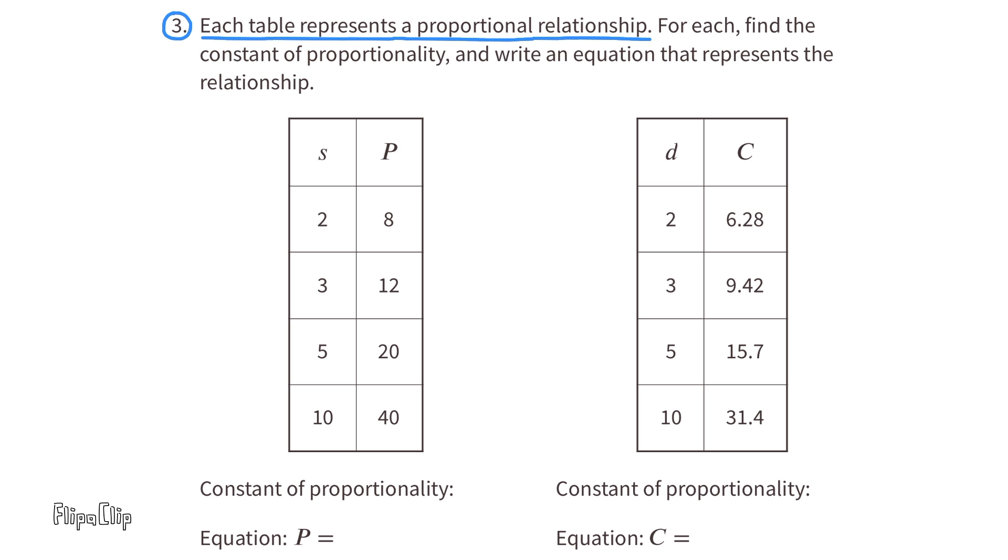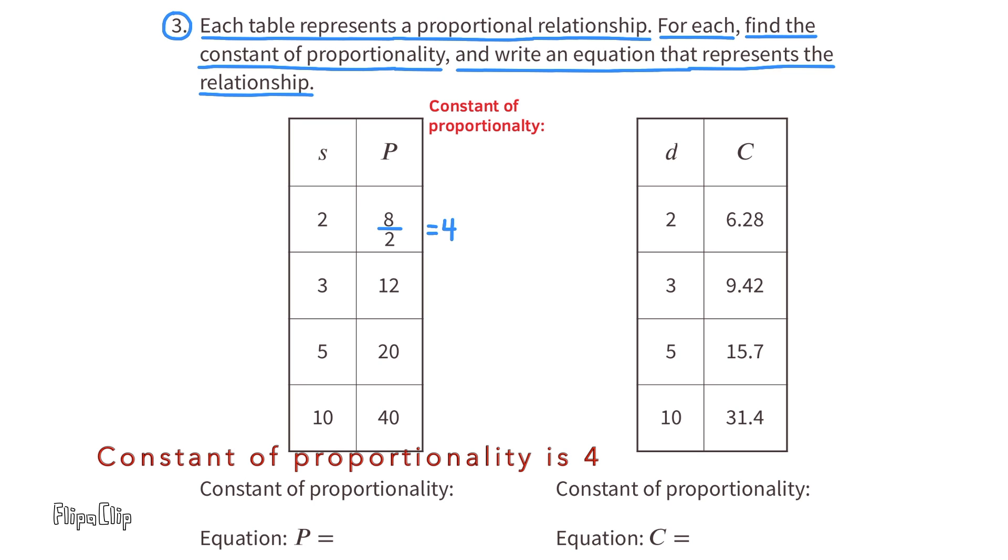Number 3. Each table represents a proportional relationship. For each, find the constant of proportionality and write an equation that represents the relationship. The constant of proportionality for this first table would be p divided by s, or in the case of the top row, it would be 8 divided by 2. 8 divided by 2 is 4. The constant of proportionality is 4.